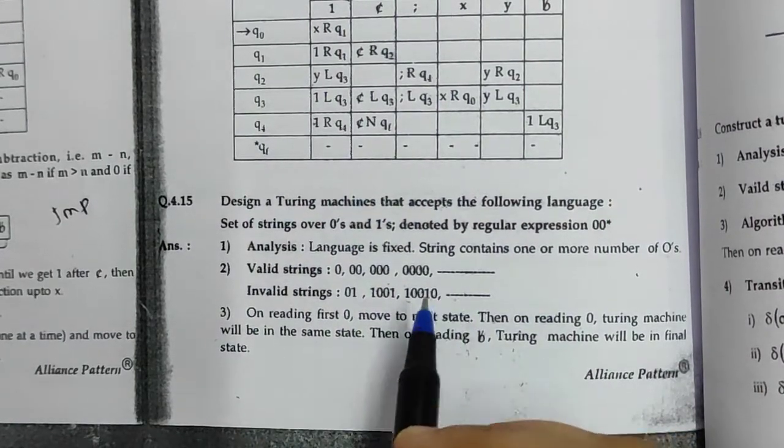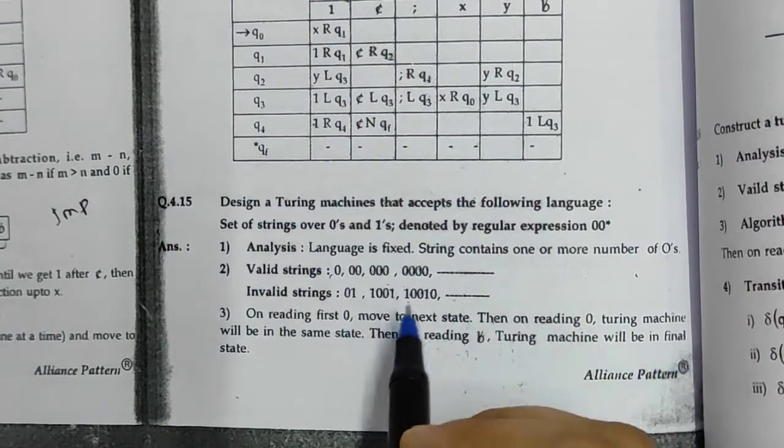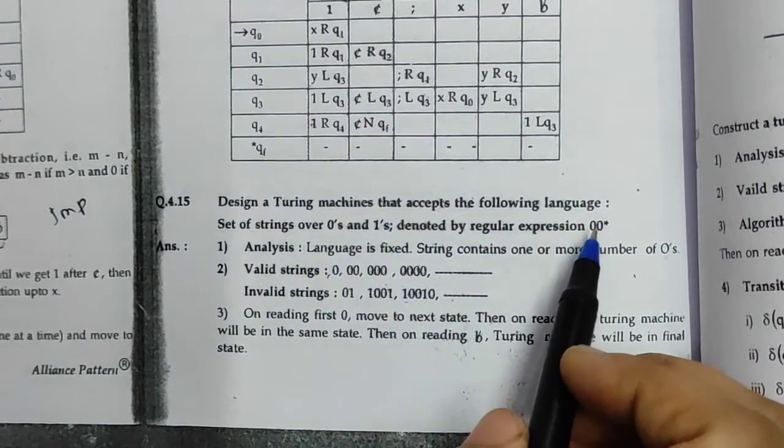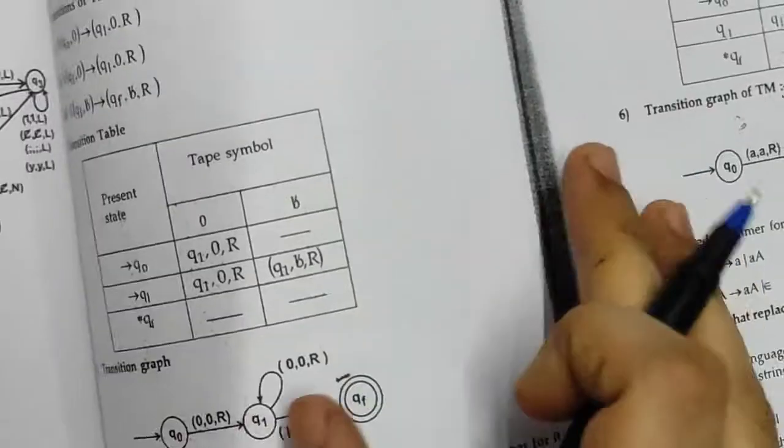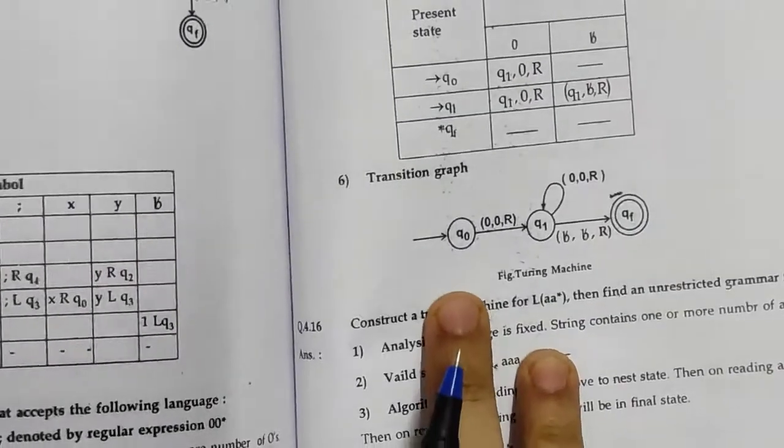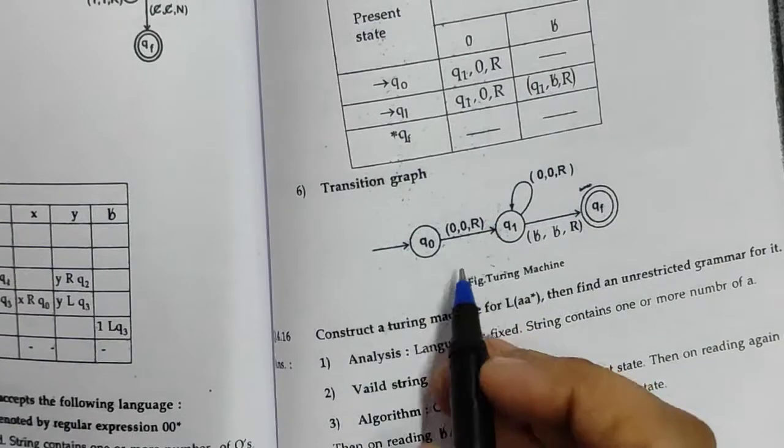There should not be any 1 in the string. Sequences of 0s will be accepted, and there should be at least one 0 in the string. Now we will move to the transition graph.